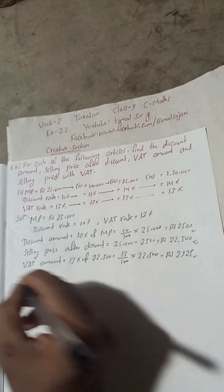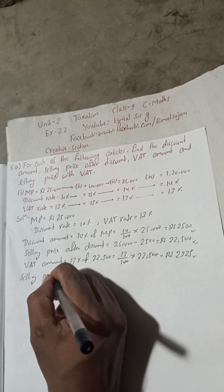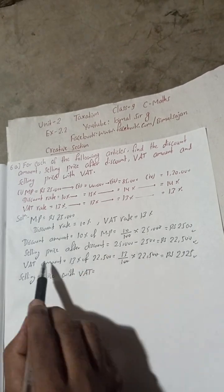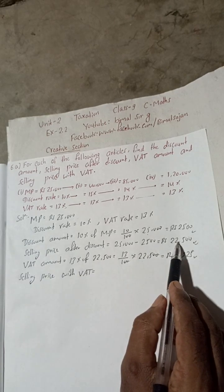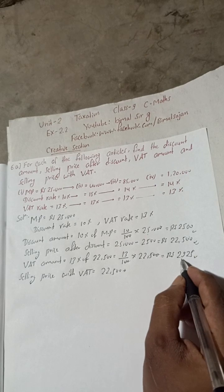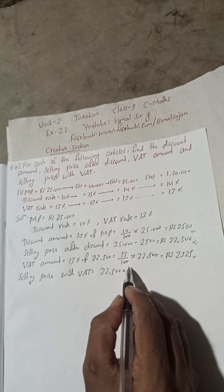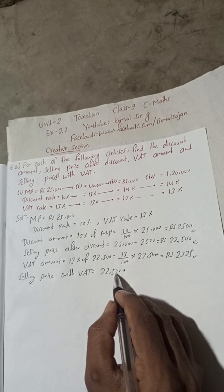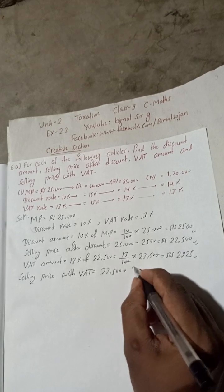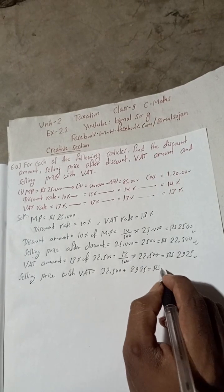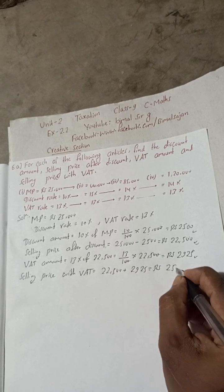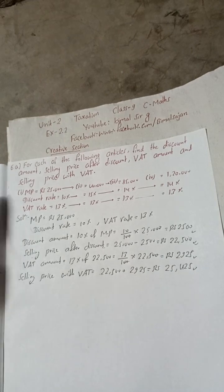Now selling price with VAT equals selling price after discount plus VAT amount. You can also write the formula if you want. So 22,500 plus 2,925 equals Rs 25,425. Number 1 is complete.